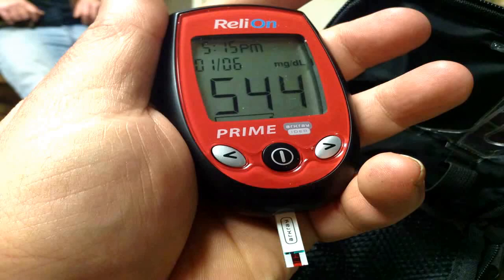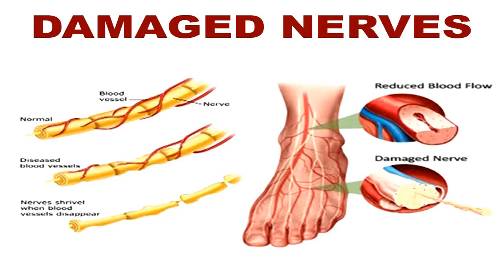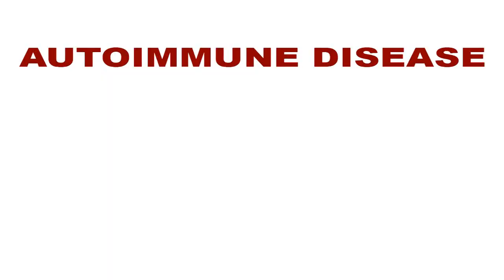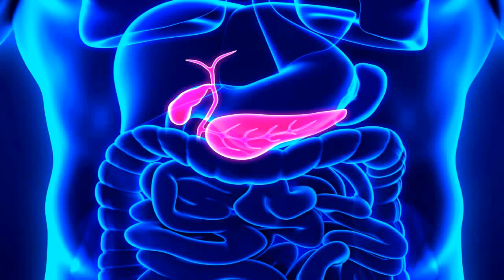Untreated high blood sugar from diabetes can damage your nerves, eyes, kidneys, and other organs. There are different types of diabetes. Type 1 diabetes is an autoimmune disease. The immune system attacks and destroys the cells of the pancreas, where insulin is made. It is unclear what causes this attack. About 10% of people with diabetes have this type.